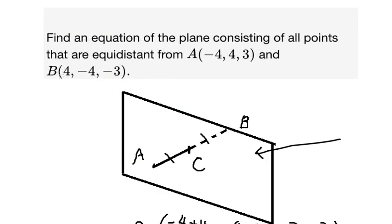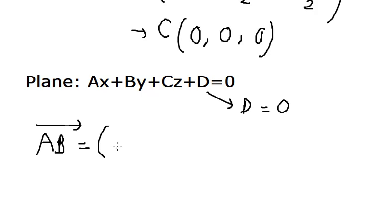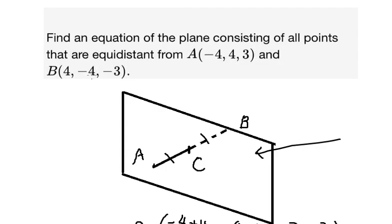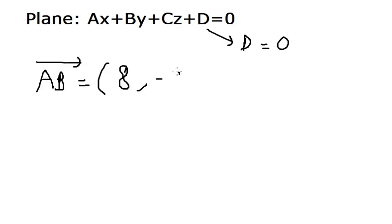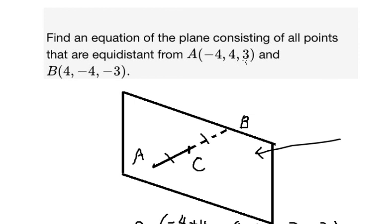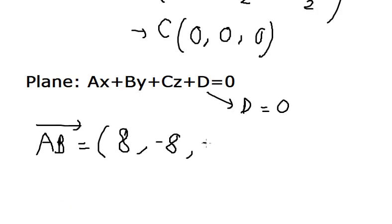So we have B minus A. You got about 8. Negative 4 minus 4 in here. You got about negative 8. Negative 3 minus 3. You got about negative 6.